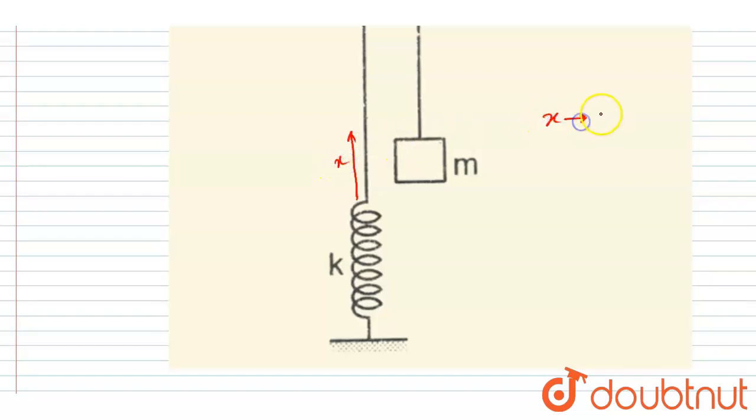So we have to make this dx/dt equals to zero, which is also equals to the velocity of this block, right? So finally the velocity of the block should be zero since we want the extension in the spring to be maximum.